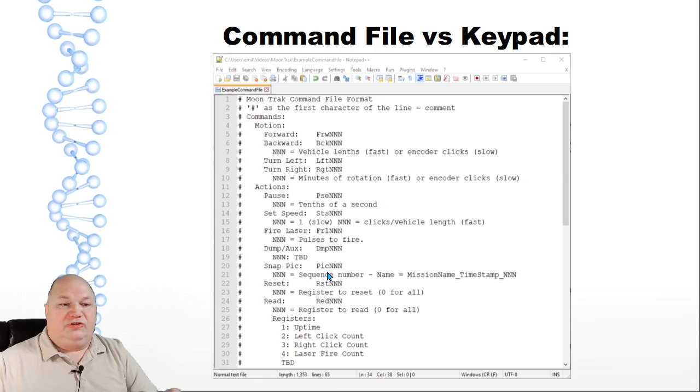As far as the level 2 functionality, we want to be able to snap a picture, give it some sort of sequence number, mission name and time stamp so that the files are different. Then of course we have some way of resetting the device and reading various registers. These are just bits of information. The left click count from the motors, the right click count, the uptime, the number of times a laser has been fired. We'd also later on have things like a set of flags that tell you what the state of each of the obstacle detectors are. You want to design with expandability in mind.